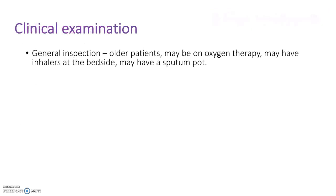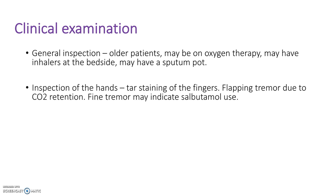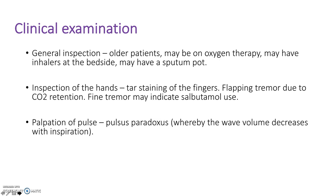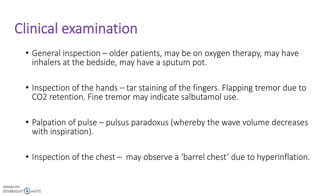On examination, the patient is usually older; they may be on oxygen therapy, have inhalers at the bedside, or a sputum pot. On inspection of the hands, expect tar staining of the fingers; a flapping tremor may indicate CO2 retention, and a fine tremor may indicate salbutamol use. On palpation, pulsus paradoxus may be felt, where pulse volume decreases with inspiration. Inspection of the chest may reveal barrel chesting due to hyperinflation, and auscultation may present with an expiratory wheeze.